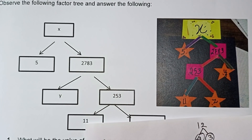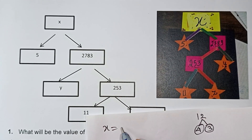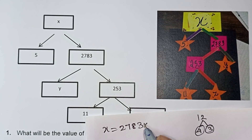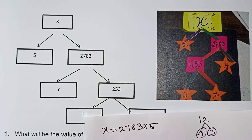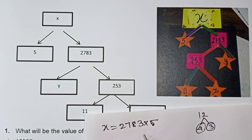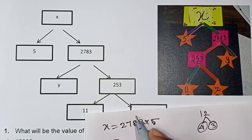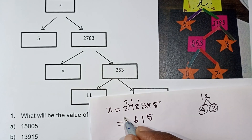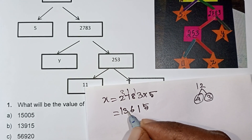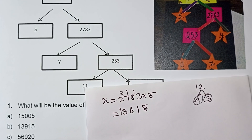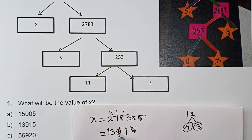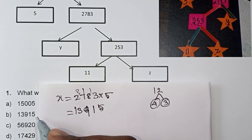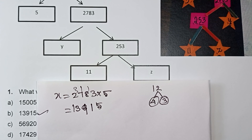If you multiply the factors, x = 2 × 7 × 8 × 3 ... multiplied by 5. Calculating: 15 remainder 1, 41 remainder 1, 36 remainder 3 — so 35 + 4 = 39... giving 1395. The answer is option B. That is the correct answer.